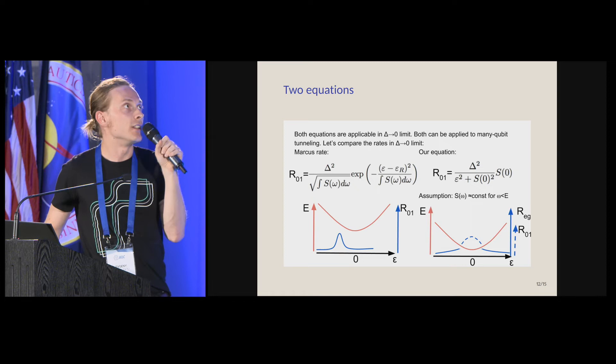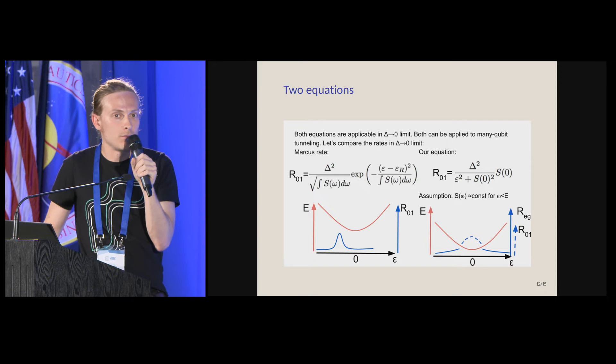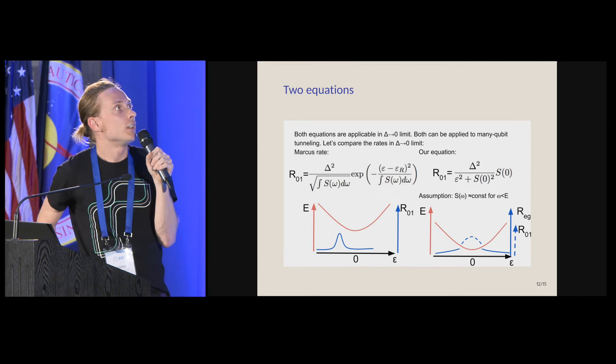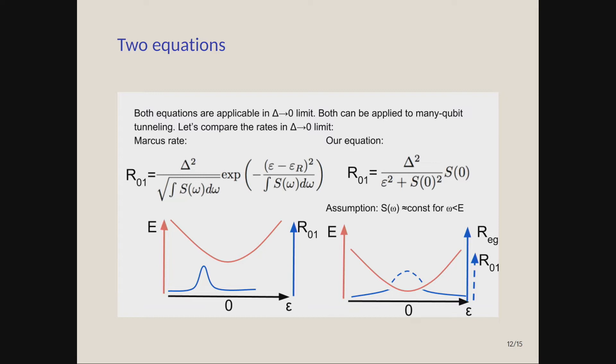Both of the approaches actually are valid. Both of these formulas, under their respective assumptions, are valid in delta going to zero limit. They are also both can be applied in principle to many qubit systems. I just consider one qubit for simplicity. We see that there is this reorganization energy shift that appears in their approach, but not in ours. This Lorentzian actually has some bath dependence in the denominator, and their formula also has some bath dependence in the denominator. Specifically, the value at peak is actually slightly different. Both of them have delta-squared dependence, but the formulas differ: one just assumes the flat spectral density, which stands in the denominator. In another case, it's this W, the bandwidth of the noise, so-called, that stands in the denominator.